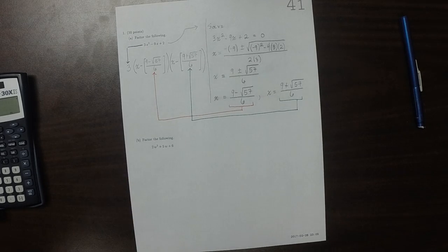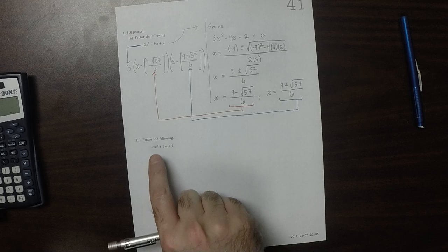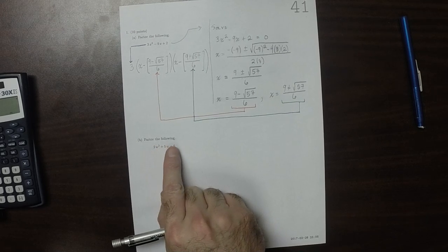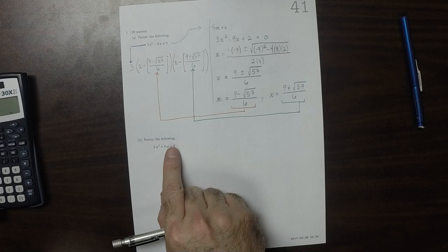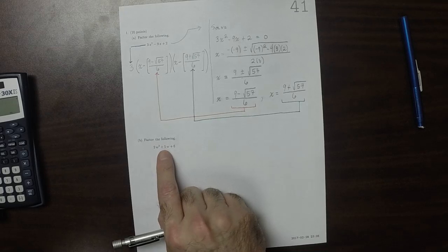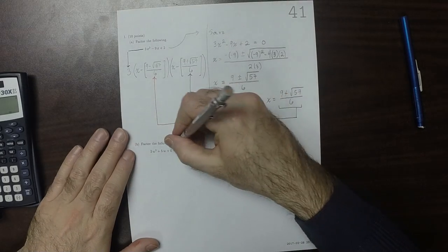Now let's factor this one. Again, can we think of two numbers whose product is 12 and whose sum is 5? 1 and 12, 2 and 6, 3 and 4. No. So let's work on the related exercise.